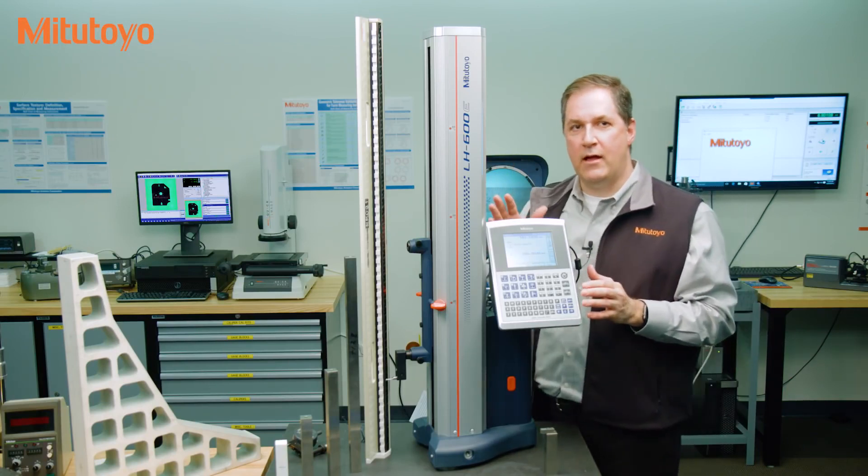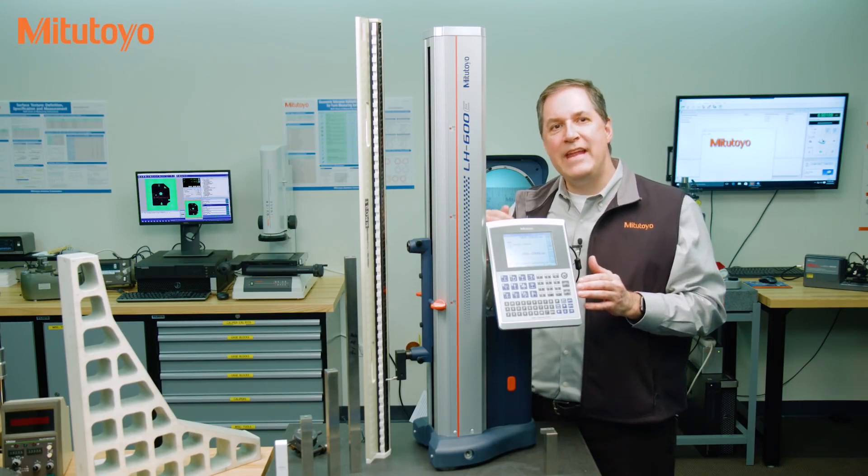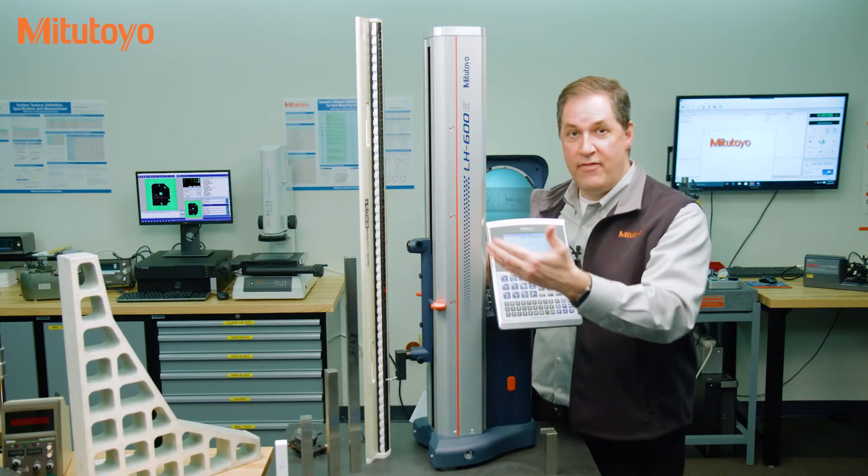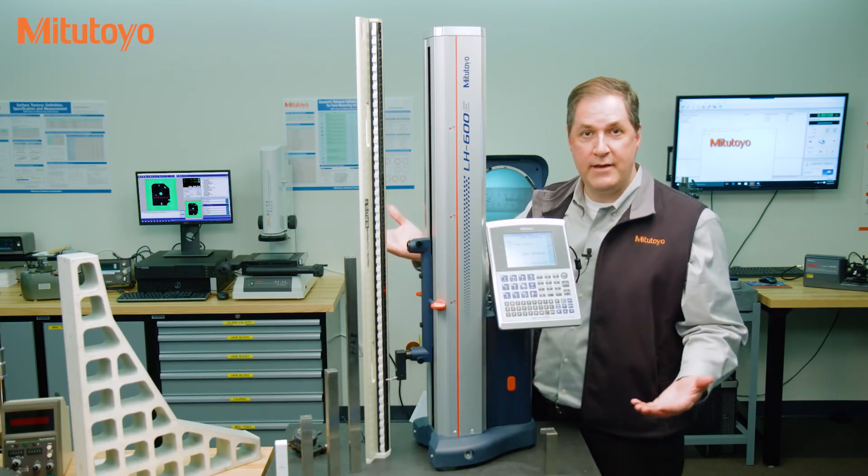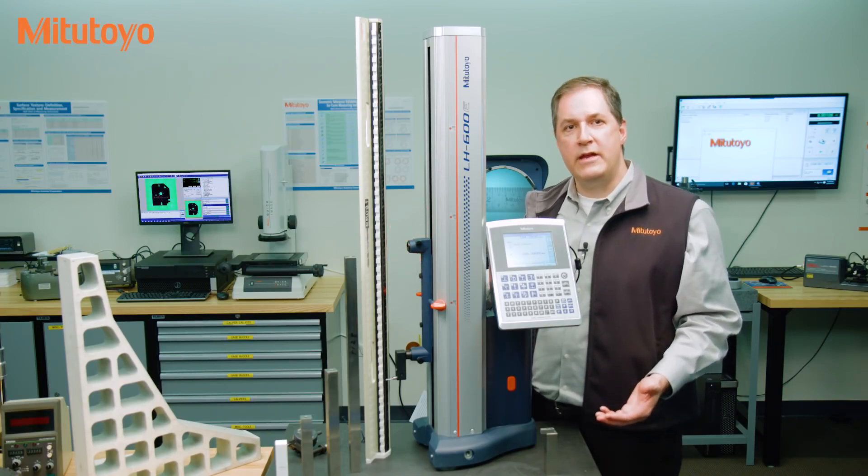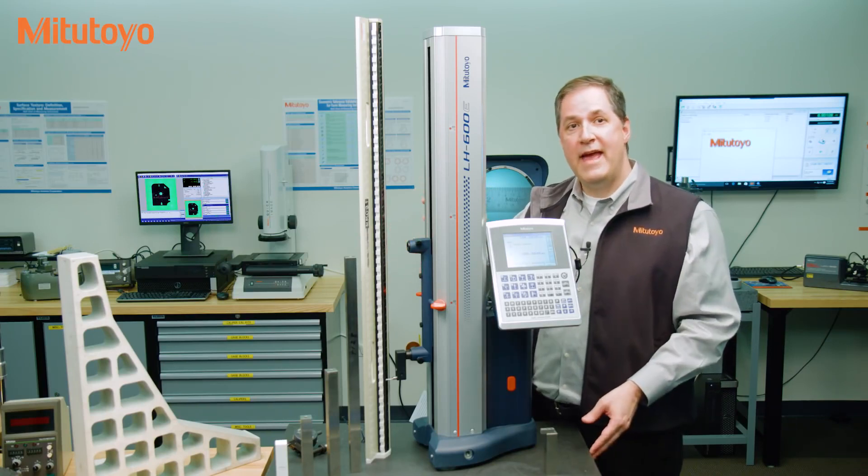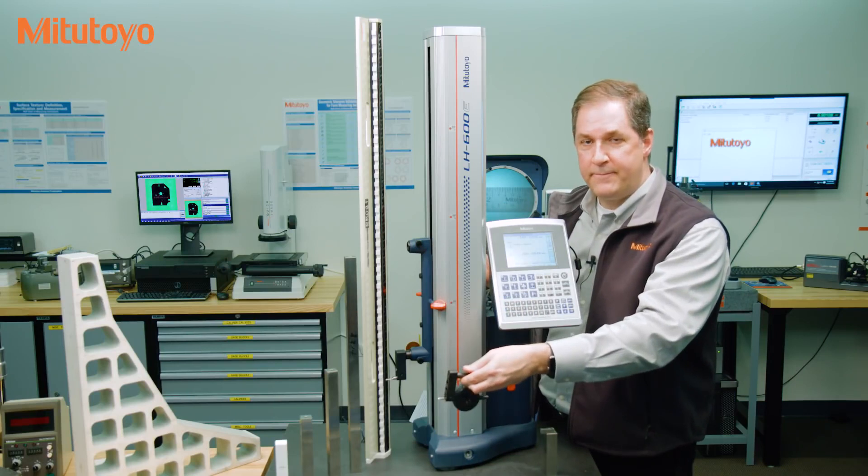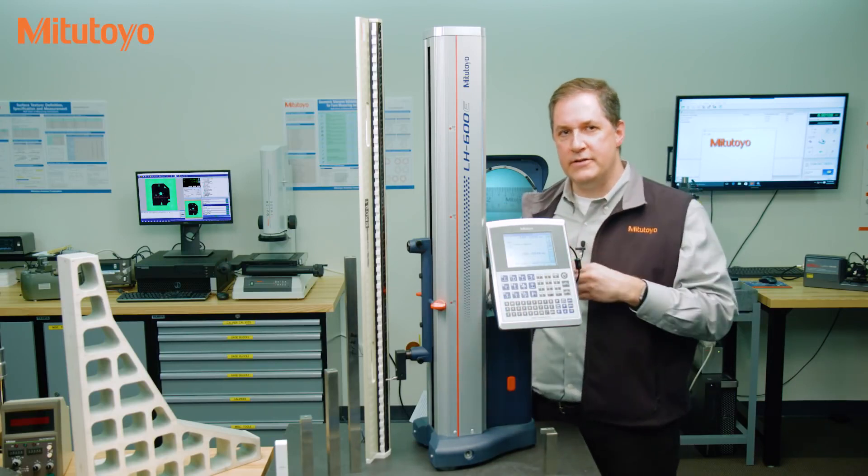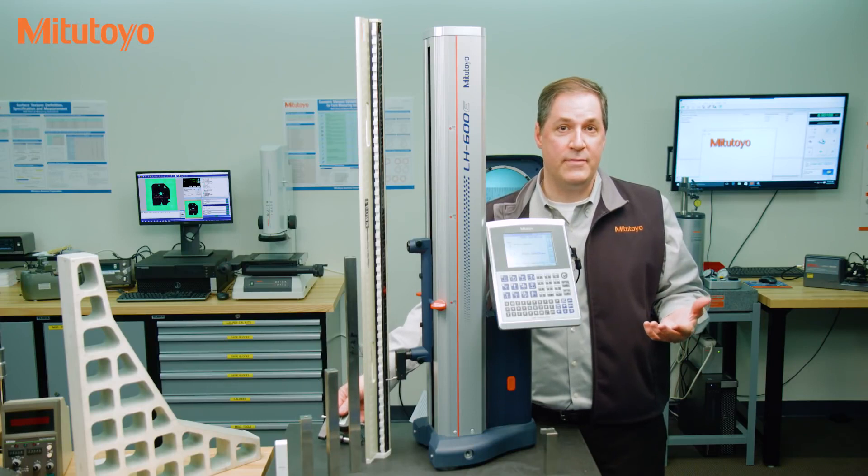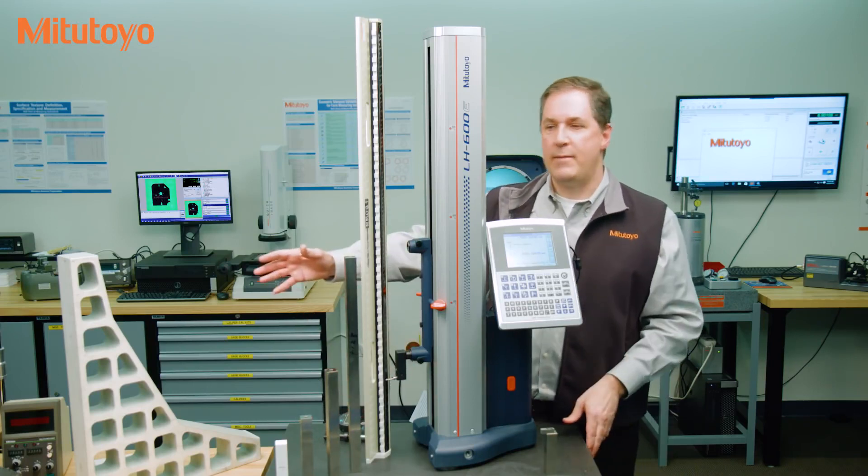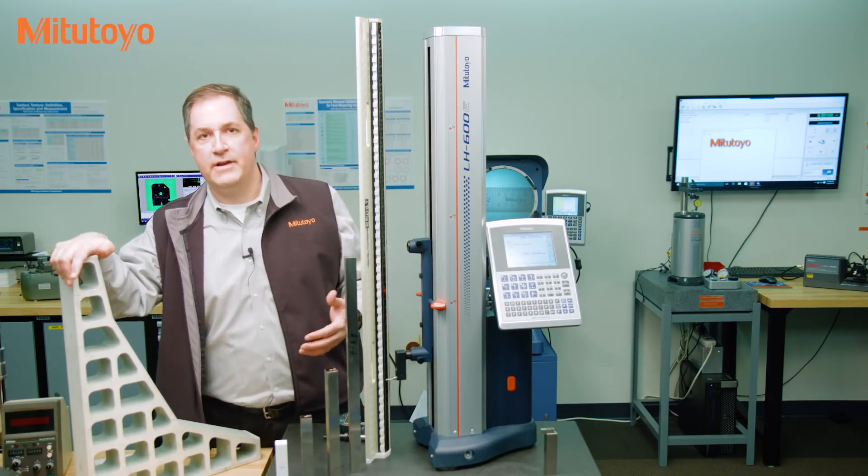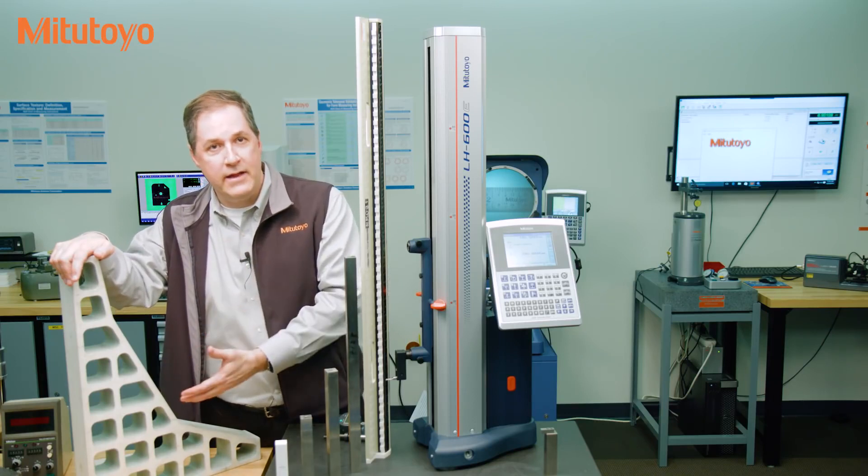Now, before we discuss the third type of calibration, what we need to talk about is what needs to get calibrated on your measuring equipment. For this linear height, if you are only measuring heights, then this test with the checkmaster for height measuring accuracy is the only thing that you need calibrated. However, this linear height has additional functions. It can measure things like straightness and perpendicularity. And if you are using these additional functions, then you need additional stuff to be calibrated. For example, we have a ceramic square over here. And if I am not using the straightness and perpendicularity functions, then I don't want to waste my money getting that calibrated.